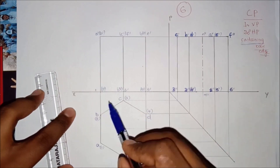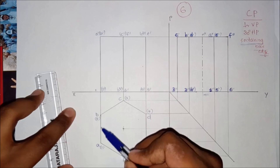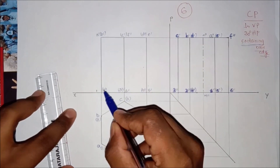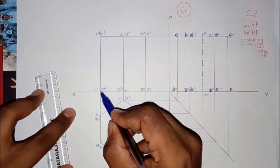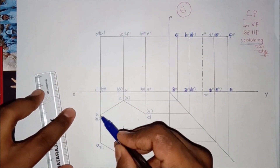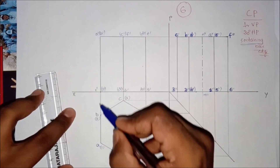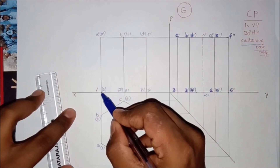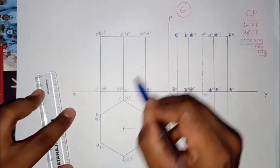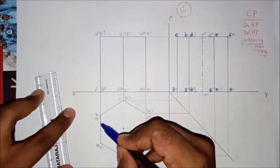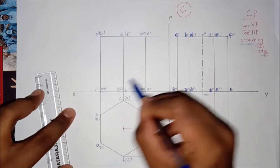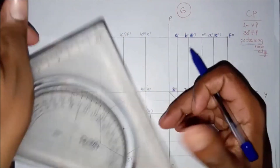The base edge is perpendicular to the point here. Points 1 and 2 — 1-dash and 2-dash form a point, so 1-dash and 2-dash is the base edge. The base edge is perpendicular to that point, and the inclination is 30 degrees.